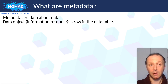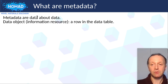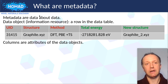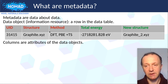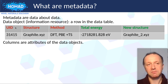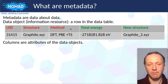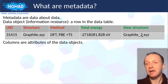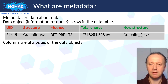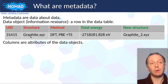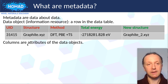First you need to understand the concept of a data object, sometimes also called an information resource. If you imagine representing your data in a table, a data object is a row in that table. In this minimal example from computational material science, one has some identifier, some structure on which a calculation is performed with some method — for example density functional theory with a specific exchange-correlation functional — and then something is calculated, like total energy, and a new structure after forces are calculated and the structure is relaxed.